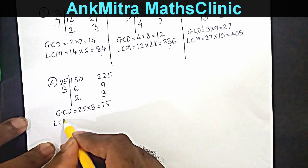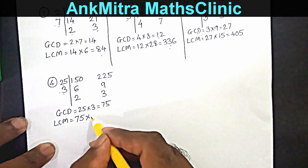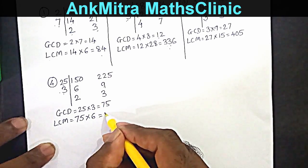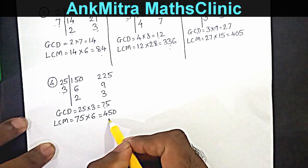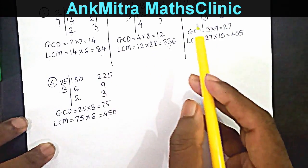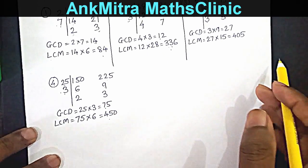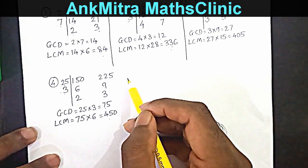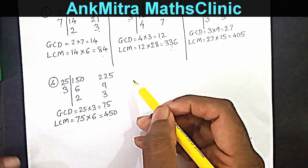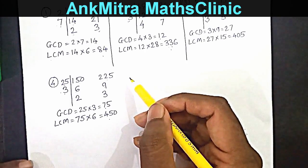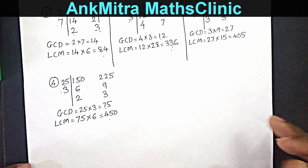LCM is the product of GCD (75) multiplied by the product of the uncommon factors (2 times 3 = 6), so 75 multiplied by 6 gives 450. GCD of 150 and 225 is 75, and LCM is 450. To use this method effectively, you need to be well versed with divisibility tests for smaller numbers from 2 up to 9, 11, or 13, so that you can quickly identify common factors. I hope this method has been well understood by everyone.